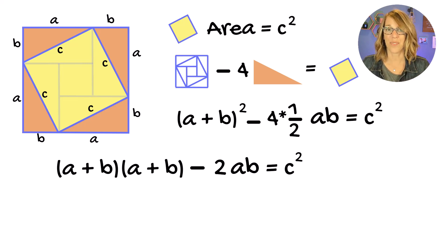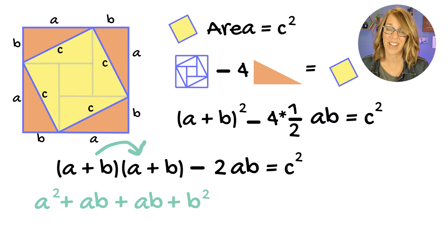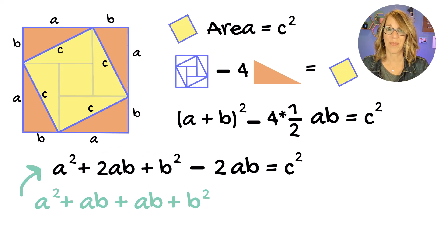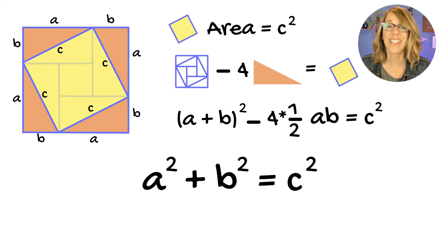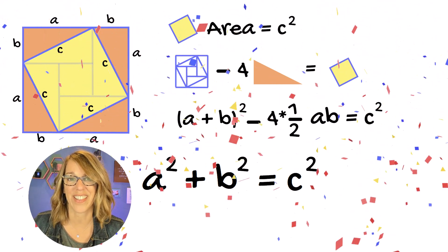Now foiling through that first quantity, I end up with A squared plus 2AB plus B squared. Let's put that right into the formula, and we end up with a positive and a negative 2AB. We can cancel those, and we're left with the Pythagorean theorem.